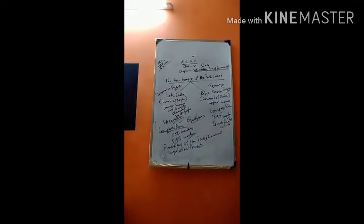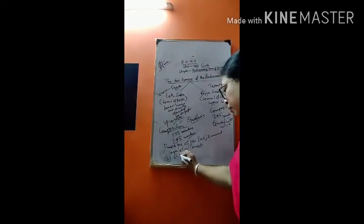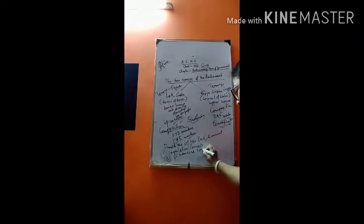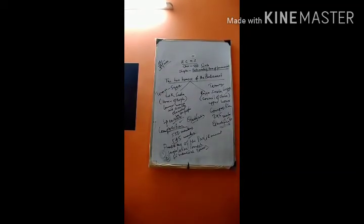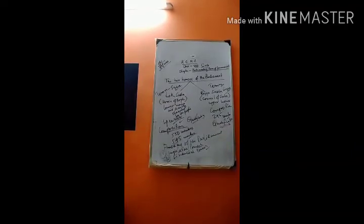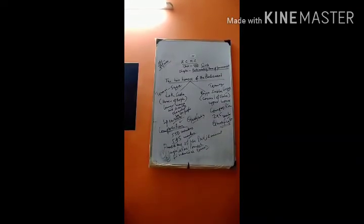The second power is financial power. Budget or money bills are presented only in the Lok Sabha. On a money bill, Rajya Sabha enjoys only a delaying power of 14 days, after which the bill is sent to the President for assent. If the budget or money bill is rejected in the Lok Sabha, the government has to resign. The budget is prepared in two parts: the railway budget presented by the Railway Minister, and the general budget presented by the Finance Minister.